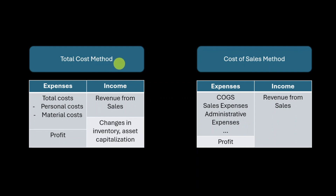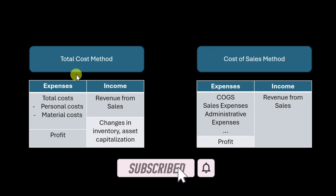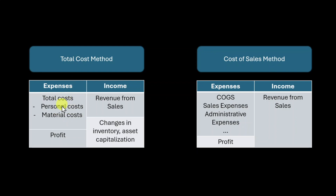On the other hand, we have the so-called cost of sales method. In this method, expenses are categorized by business functions: costs of goods sold, sales expenses, administrative expenses, and so on. On the income side, we just have revenues from sales. The main difference is we do not account for changes in inventory, and expenses are clustered by business functions. The total cost method provides a detailed list of all expenses in a period, useful for internal reporting, while the cost of sales method offers better profitability analysis — showing only costs directly tied to revenues. It is the preferred method for external reporting and investors.